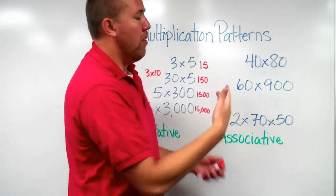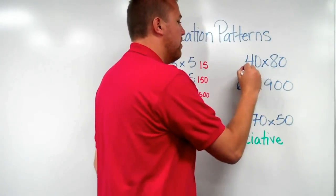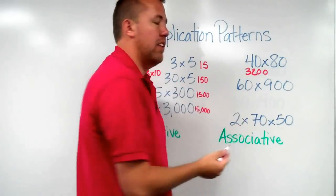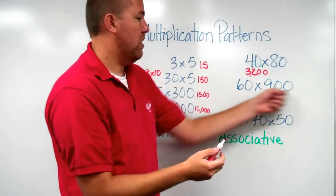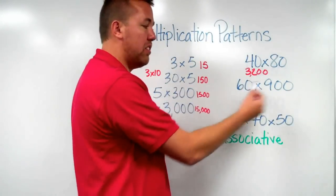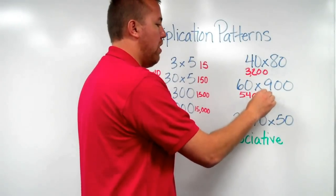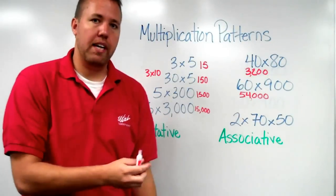Now here, we have 40 times 80. 4 times 8 is 32, and then we have our 2 zeros there, and we just add those on to the end of the answer, and we get 3,200. Same with 60 times 900. 6 times 9 is 54. Then we have 1, 2, 3 zeros, so 60 times 900 is 54,000.